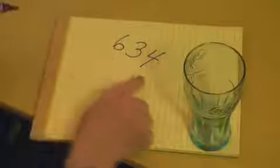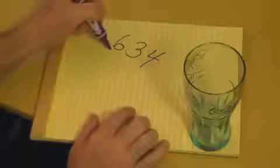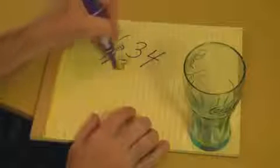So, six, three, four. The next step is to reverse these numbers. So, six, three, four becomes four, three, six.